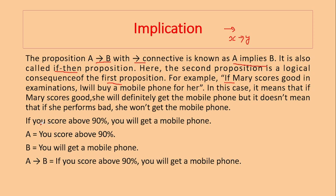For example, if you score above 90%, I'm calling this A. You will get a mobile phone, I'm calling this B. So how will we write this? A implies B. If you score above 90%, you will get a mobile phone.